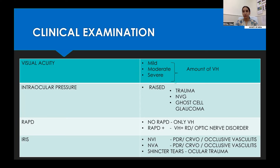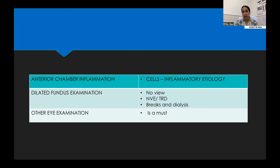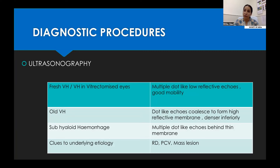We should examine the iris carefully — NVI or NVA suggests ischemic retinopathy, while sphincter tears point to ocular trauma. Cells in the anterior chamber suggest an inflammatory pathology. By rule, we should dilate both eyes; sometimes through the hue of the haemorrhage we can still see the retina and identify sclerosed vessels or focal tractional retinal detachment. The fellow eye fundus can give clues in bilateral ischemic retinopathies, and ultrasound must be done to identify any underlying pathology.